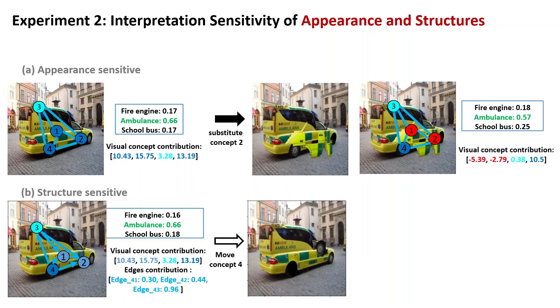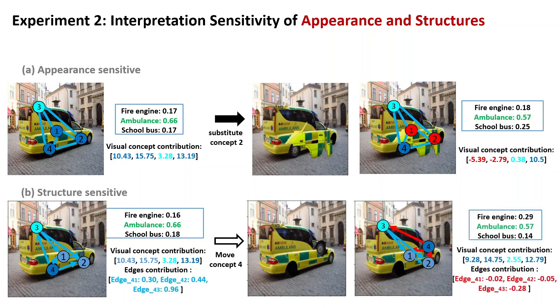Second, when we move one concept location from a reasonable place to an abnormal location like moving wheels to windshield, VRX can precisely capture the abnormal structure and produce a correct explanation.